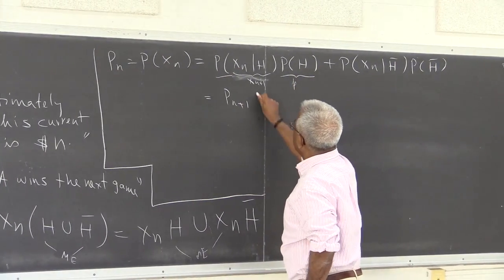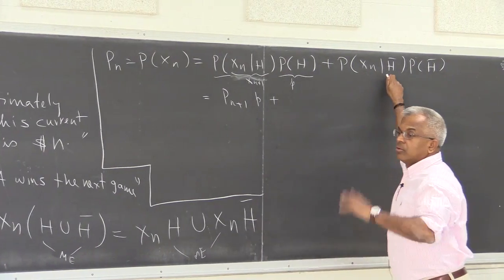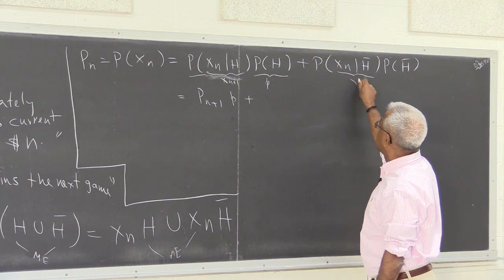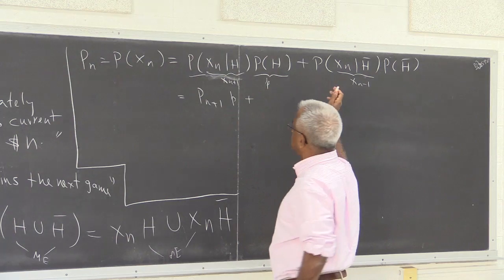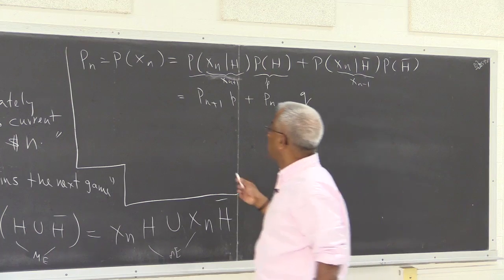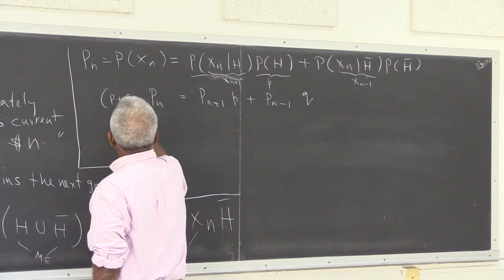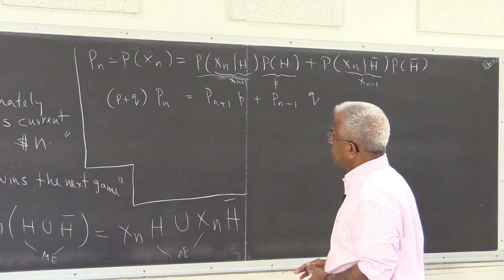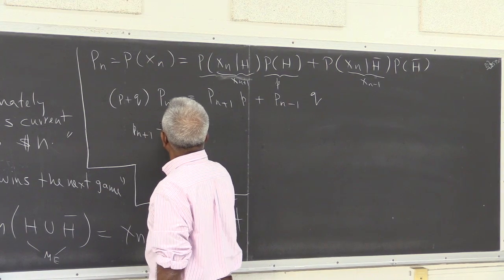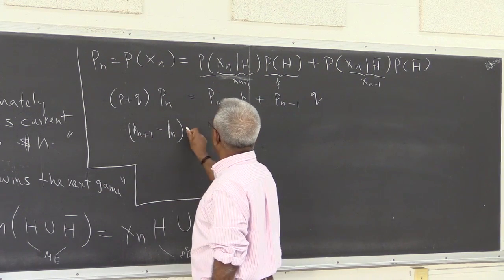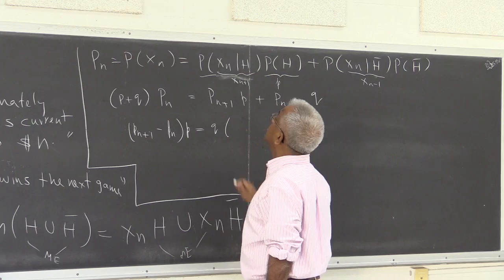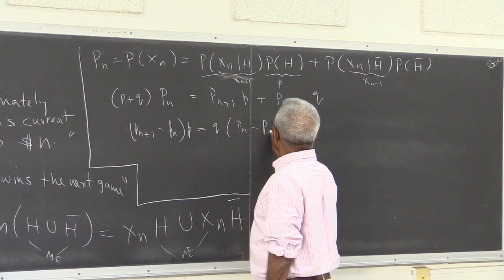So Pn = p · Pn+1 + q · Pn−1, since if A loses, he loses $1 and his capital becomes n−1, corresponding to the Xn−1 status. To make further progress, multiply through — since p + q = 1 — and bring all terms together: Pn+1 − Pn = (Q/P) · (Pn − Pn−1).